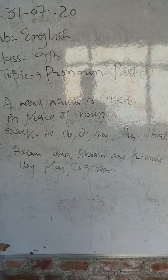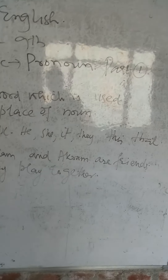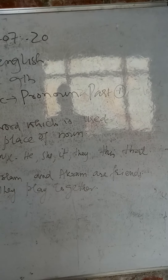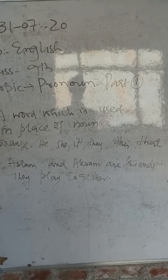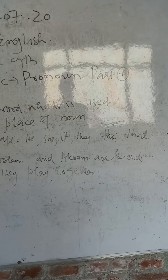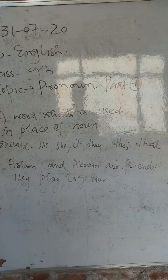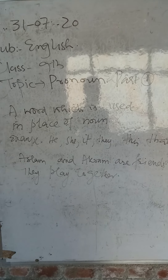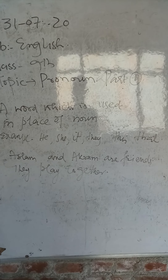For example: Aslam — he is a man. After 'Aslam' we use 'He'. Similarly, after 'Rita' we use 'She'. So the words He, She, It, They, This, That, Them — all these are called pronouns.